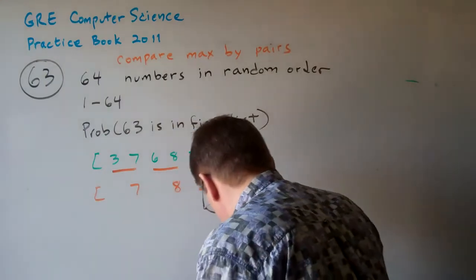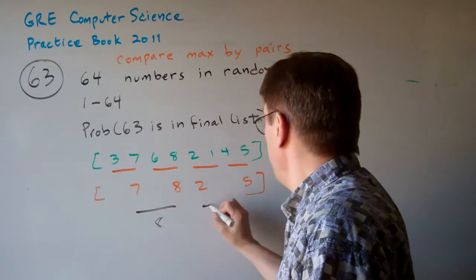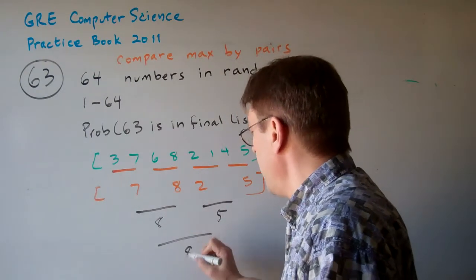And then, of course, it will reduce that further. This one will be 8, 5, and then it will finally reduce down to 8.